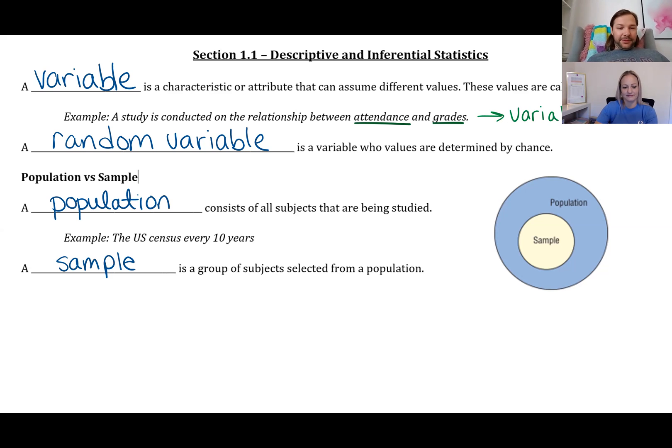Population versus sample. A population consists of all the subjects that are being studied. That could be like the entire population of the U.S. We collect census data every 10 years. That's where we try to get information on every citizen or every person in the U.S. A sample is just a group of subjects that are selected from the population. So the sample is always smaller than the whole population. Inferential statistics is where you try to study the sample and then infer what's going to happen on the population.